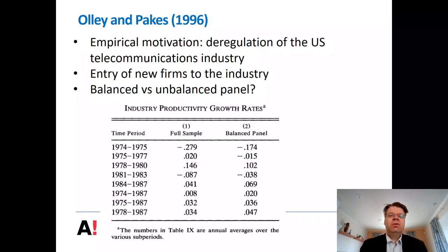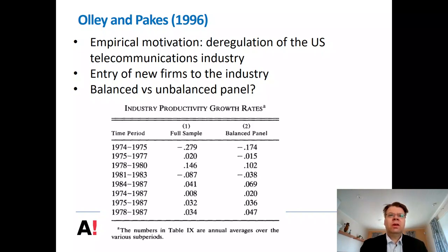A balanced panel considers only the firms that survive throughout the entire time period of the study, whereas an unbalanced panel also considers firms that entered or left the industry during the study period. It is interesting to note that this can make a big difference. In this particular case, Olley and Pakes argue that the use of the balanced panel tends to have an upward bias to the productivity estimates.